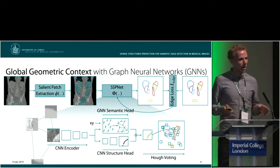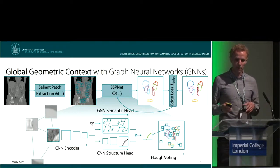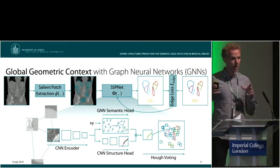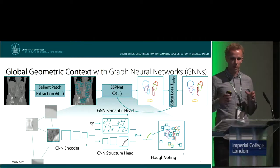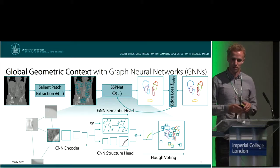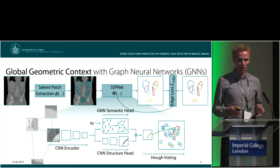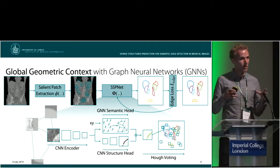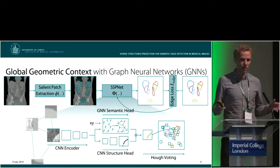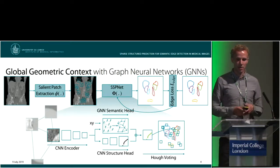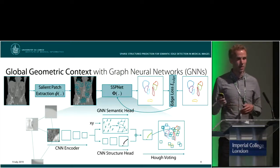Structured information and edges are extracted by the CNN structure head. At the same time we make use of a graph neural network to aggregate global context and predict semantic classes for each image patch. We then combine both results and aggregate all semantic edges into a single dense prediction.